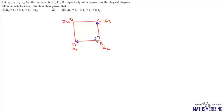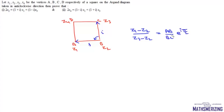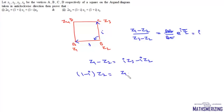We use the rotation formula for two vectors, rotating anti-clockwise with final over initial: z1 minus z2 upon z3 minus z2 equals AB upon BC times e to the power iota pi by 2. Since it is a square, AB equals BC, and e to the power iota pi by 2 equals iota. So z1 minus z2 equals iota times z3 minus iota times z2, giving us 1 minus iota times z2 equals z1 minus iota z3.